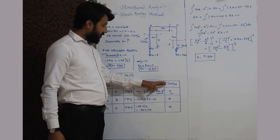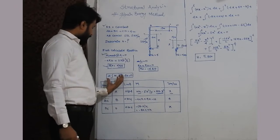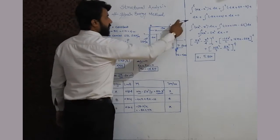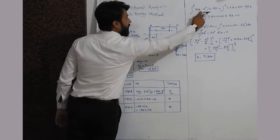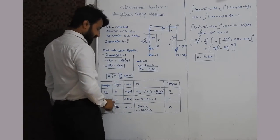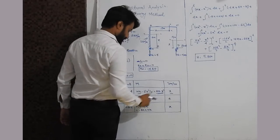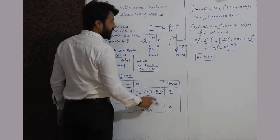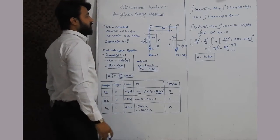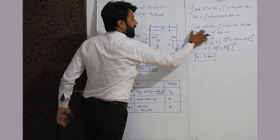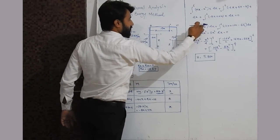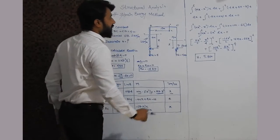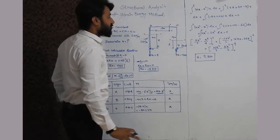Now substituting M and ∂M/∂H into the strain energy equation and summing over all members: ∫₀⁴(Hx − x²)·x dx + ∫₀⁴(−4x + 4H − 16)·4 dx + ∫₀⁴(Hx − 8x)·x dx = 0. Expanding the brackets gives: ∫₀⁴(Hx² − x³) dx + ∫₀⁴(−16x + 16H − 64) dx + ∫₀⁴(Hx² − 8x²) dx = 0.